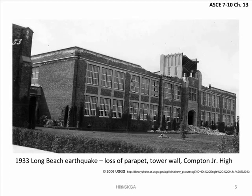This is a slide showing the type of damage that was addressed by the San Francisco parapet ordinance. It was from the Long Beach earthquake in 1933, and you can see that the falling rubble was right over the entrance of this building — a junior high school — where people would have been trying to exit the building.